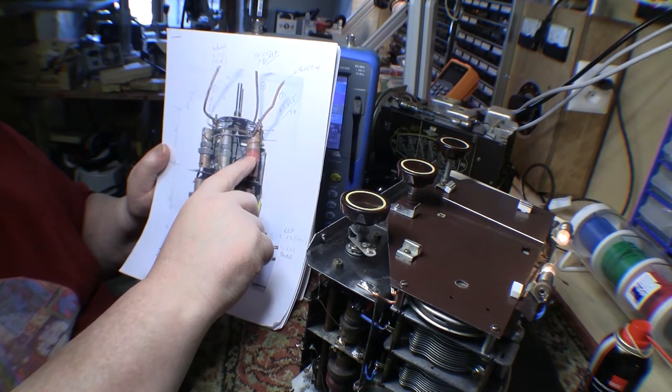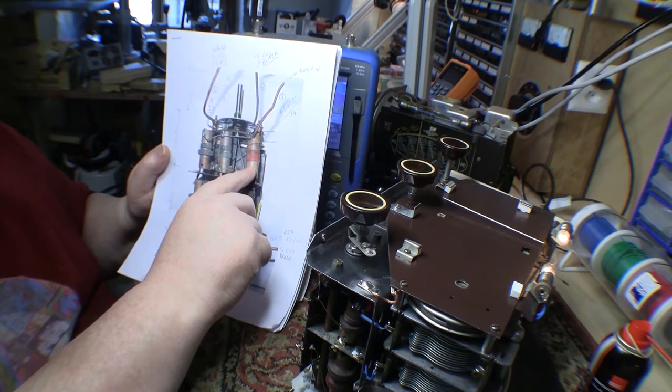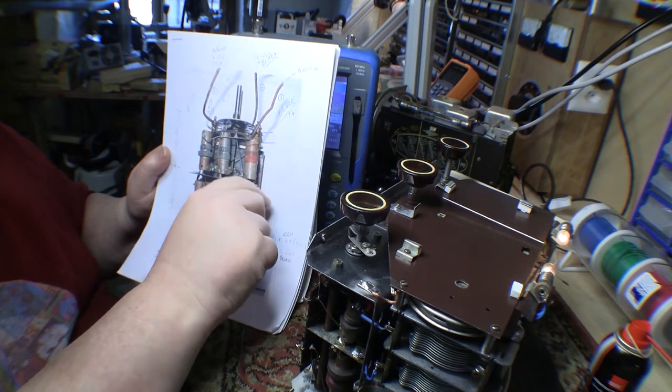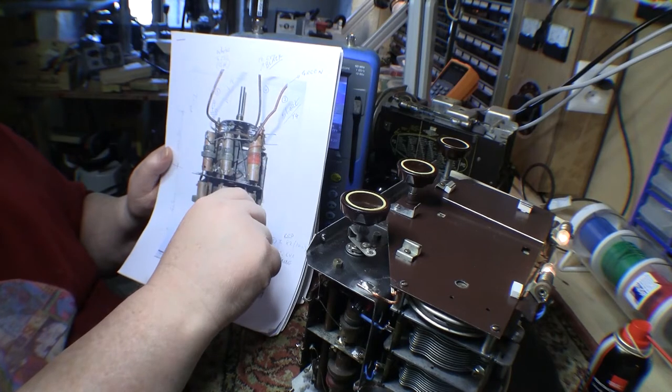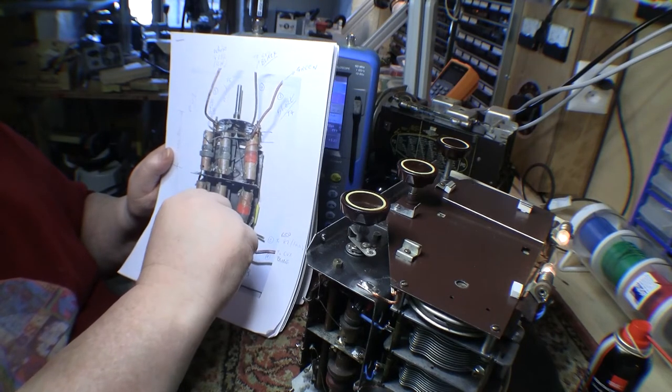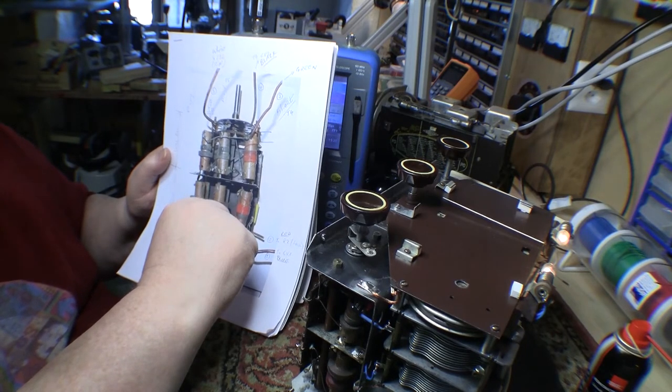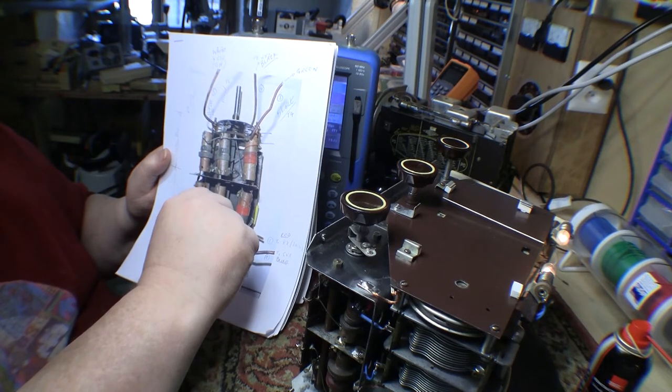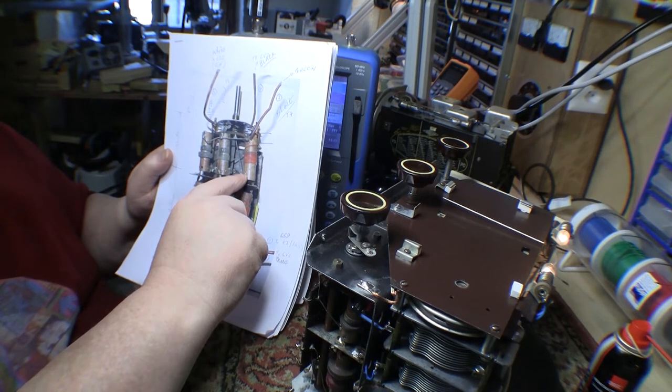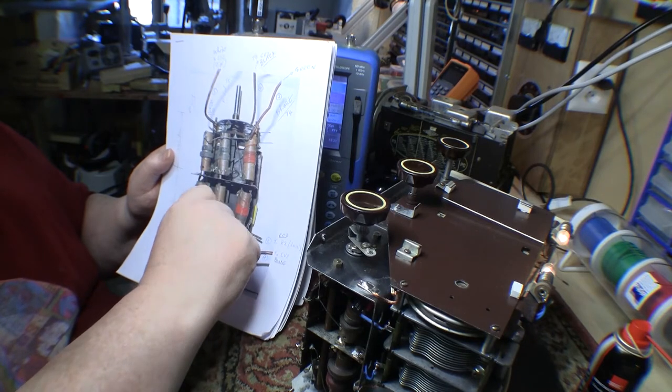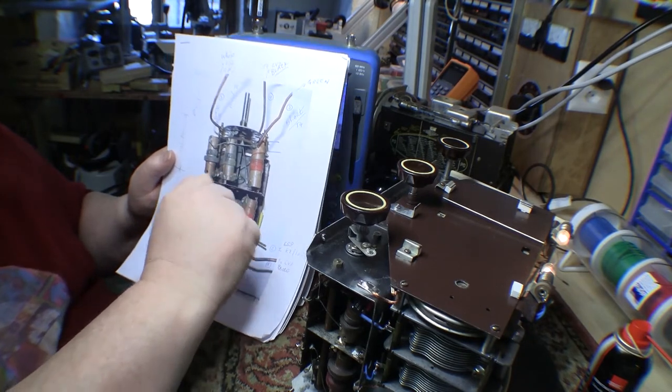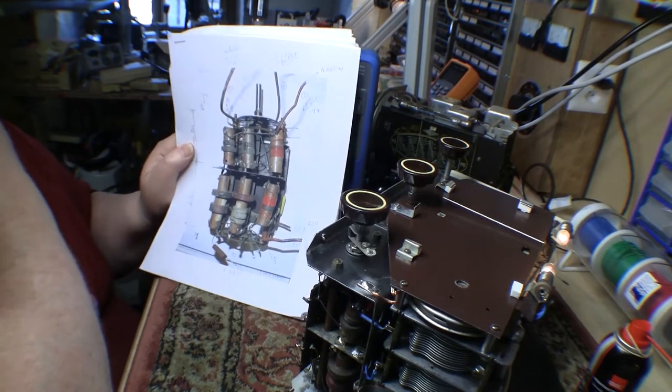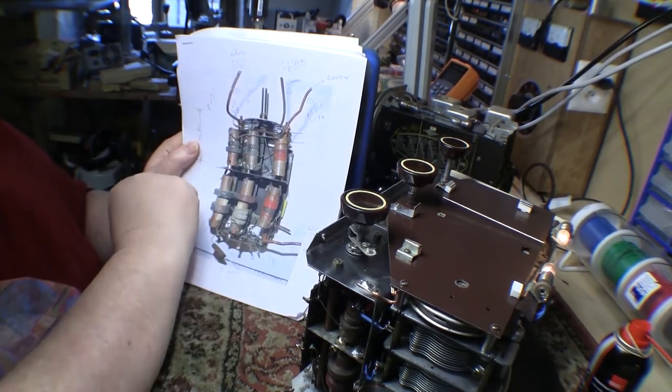And then it looks like maybe half as many on the second coil. So really hard to know what's going on here. As I say, when I measure from end to end of each coil, I get a very, very low ohmic value, as you can imagine, just a couple of turns.